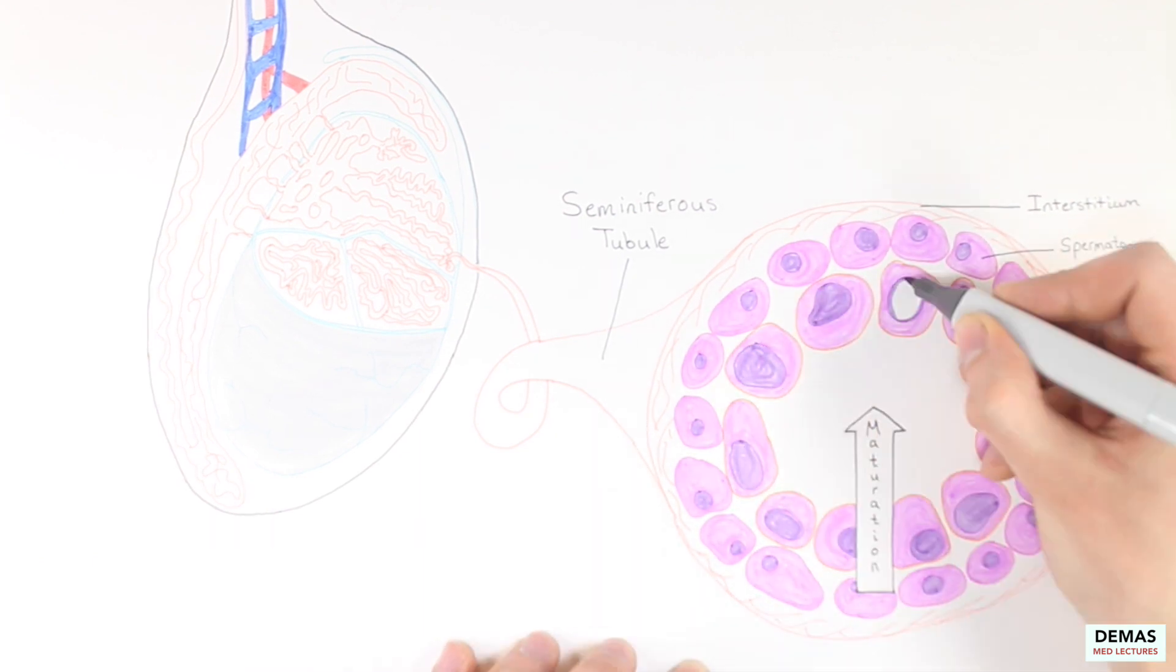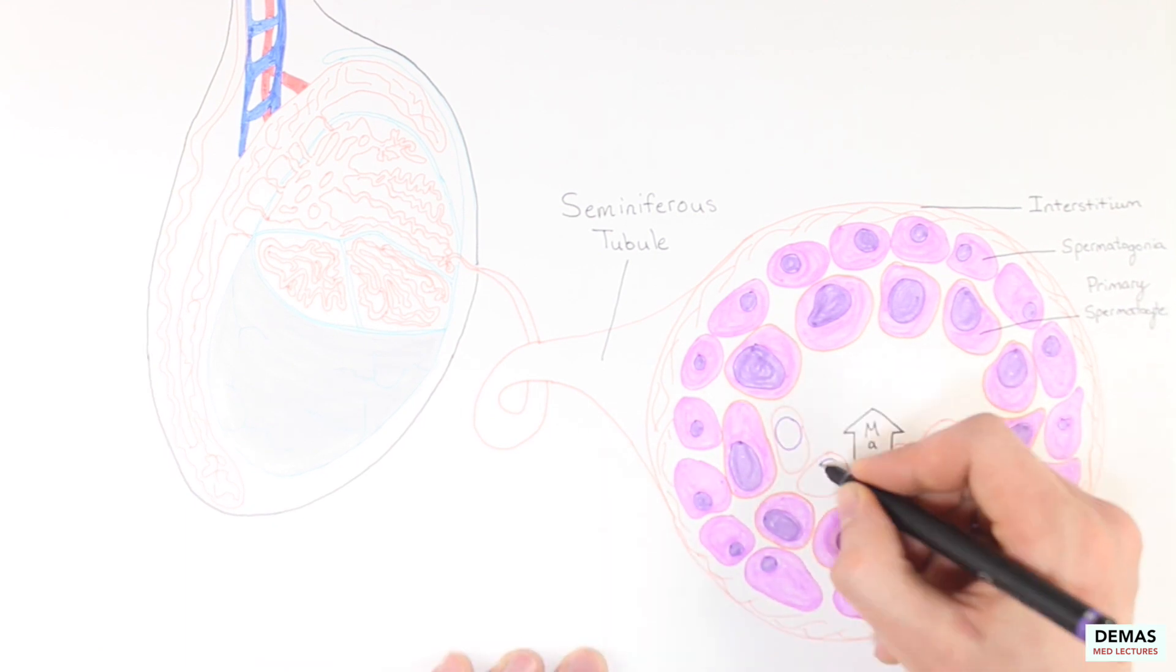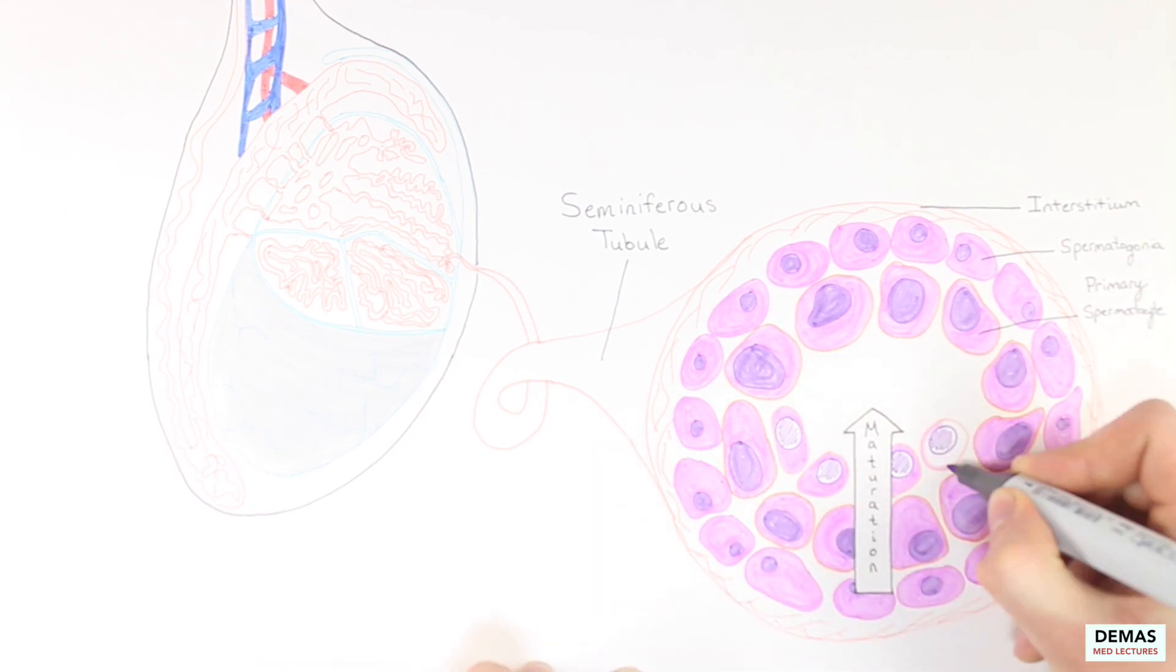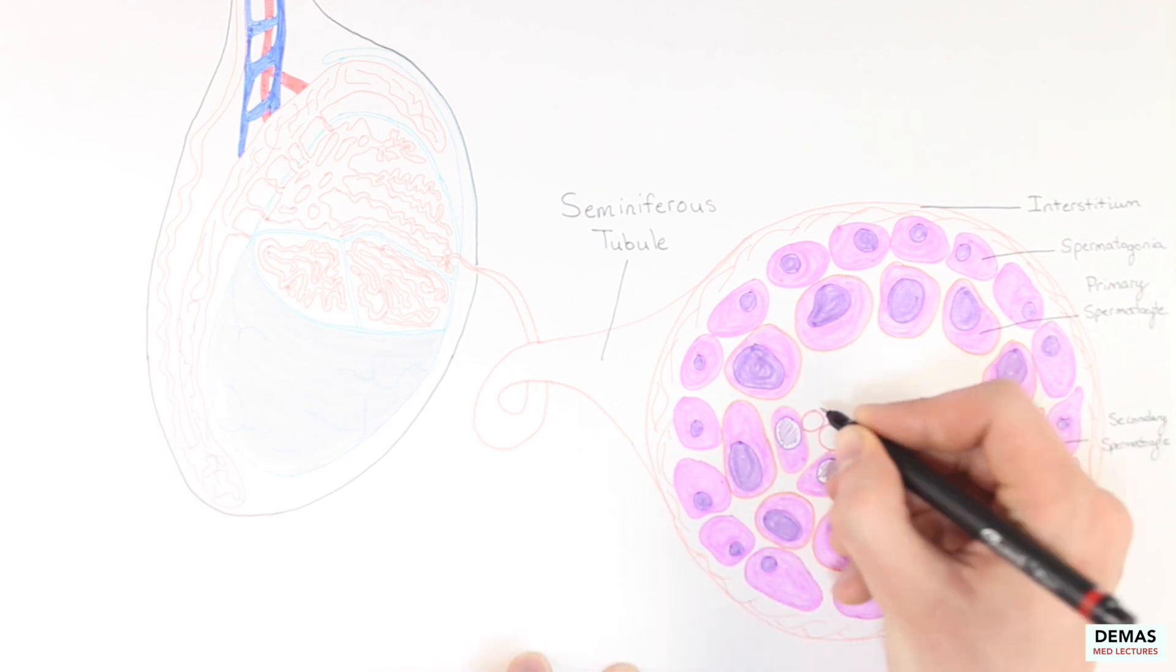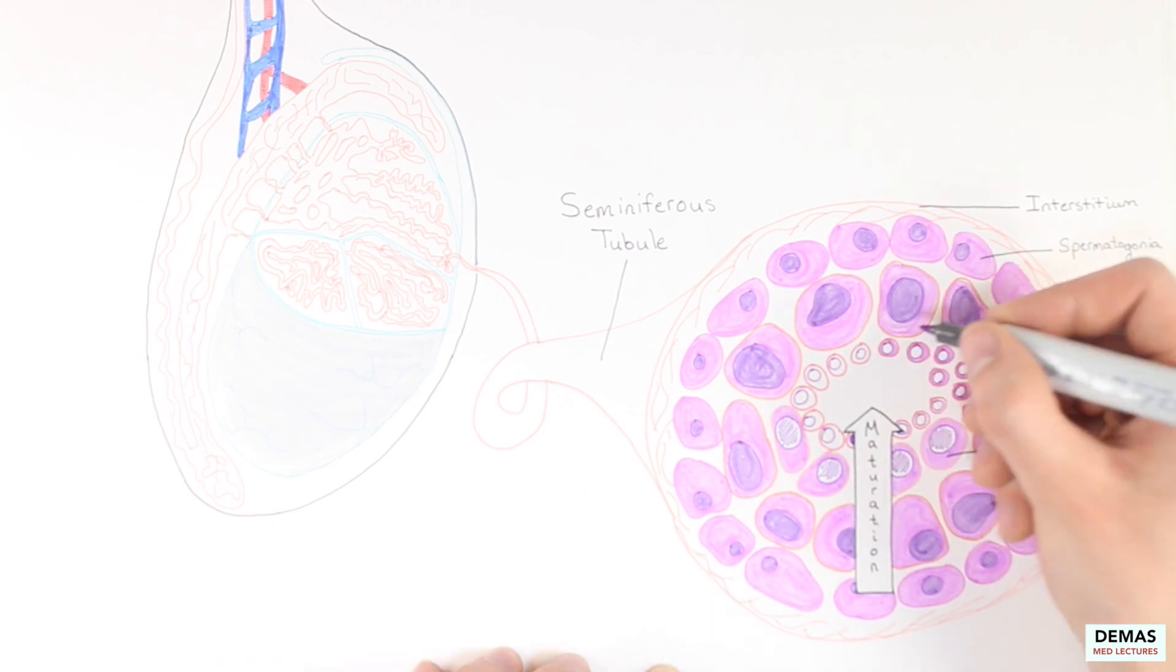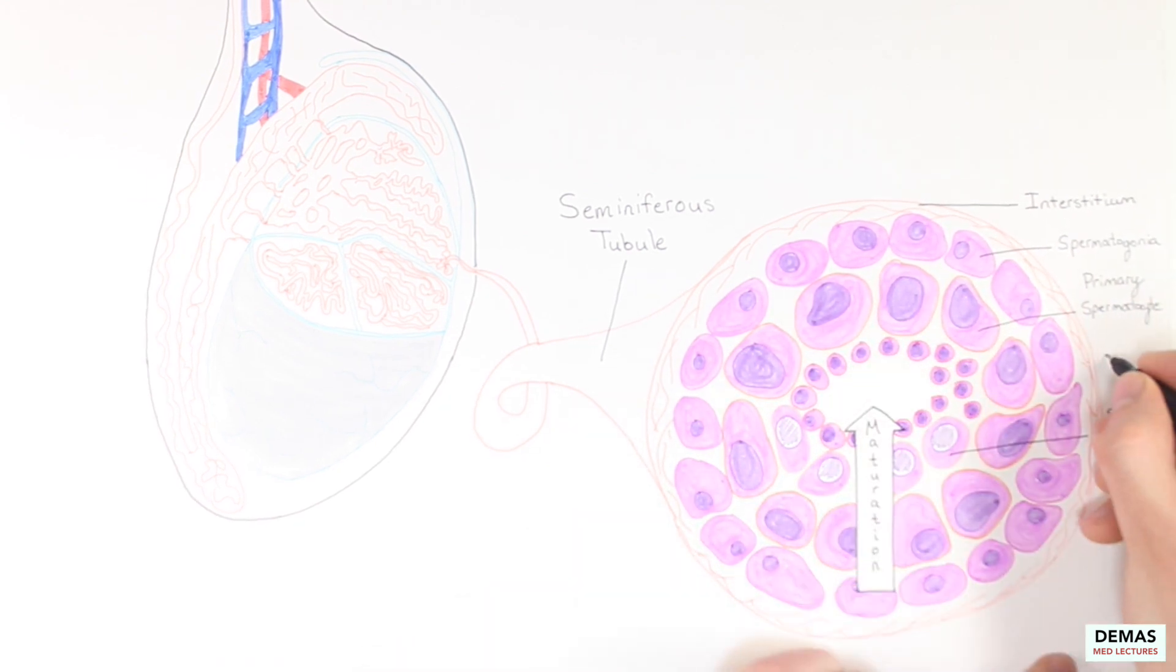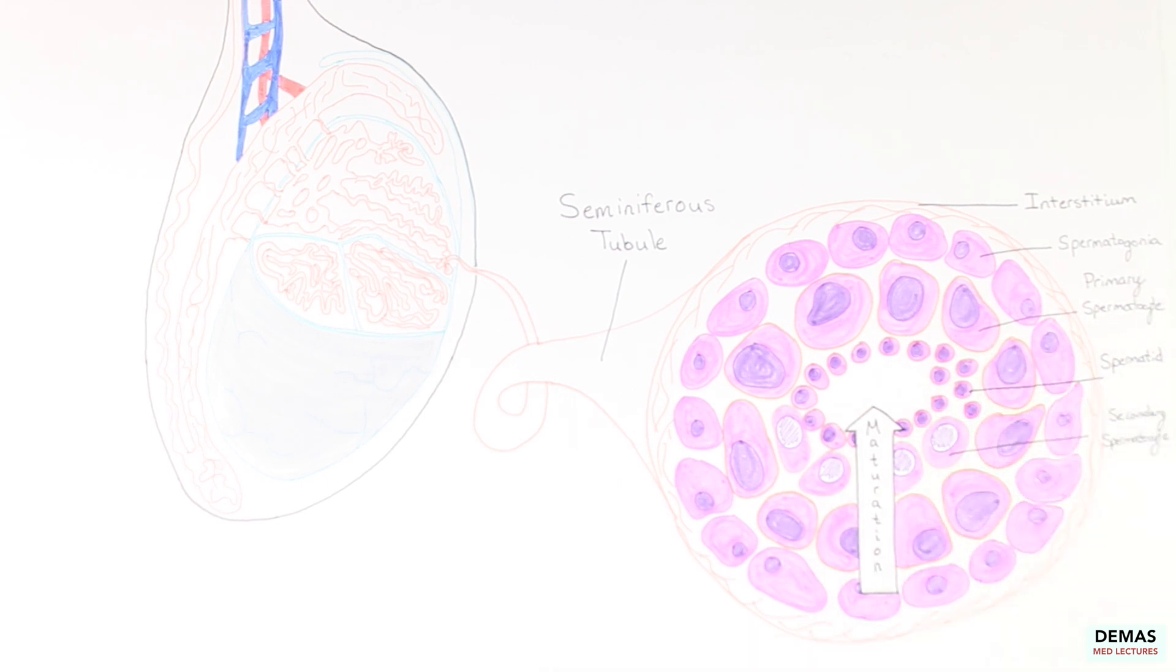The diploid spermatogonia become primary spermatocytes, and then secondary spermatocytes. Finally, the haploid spermatid is formed, which can be found at the interior of the tubule. This process of maturation from outside to inside allows for the haploid germ cells to then be transported through the lumen to be stored for use at a later time.